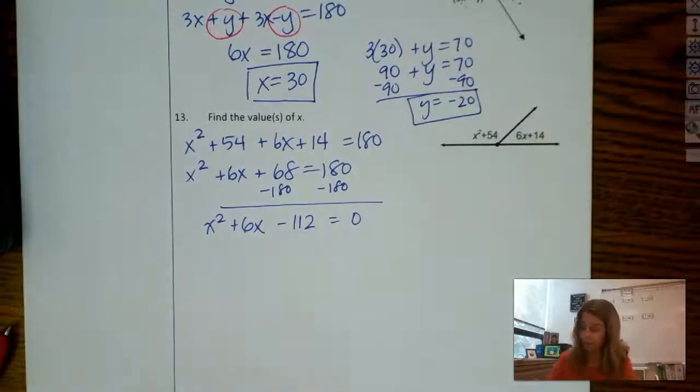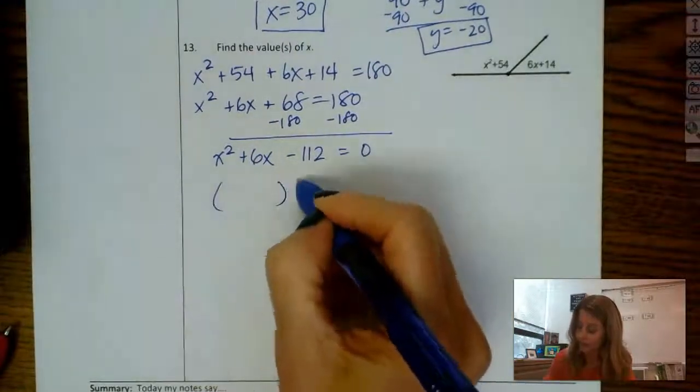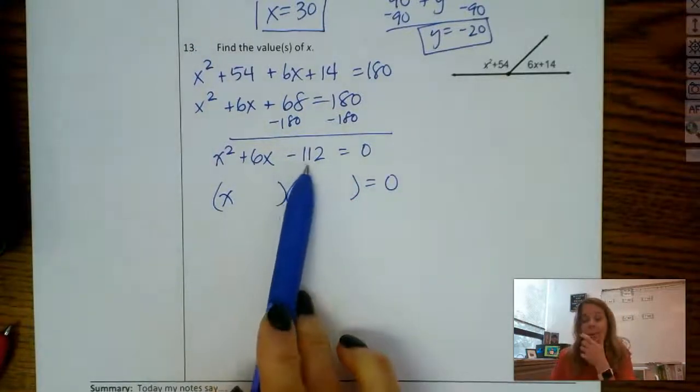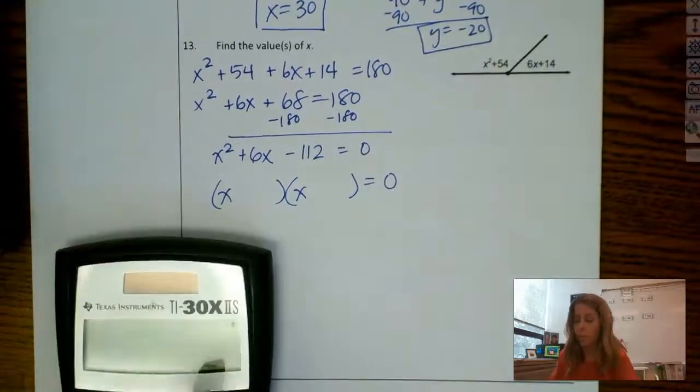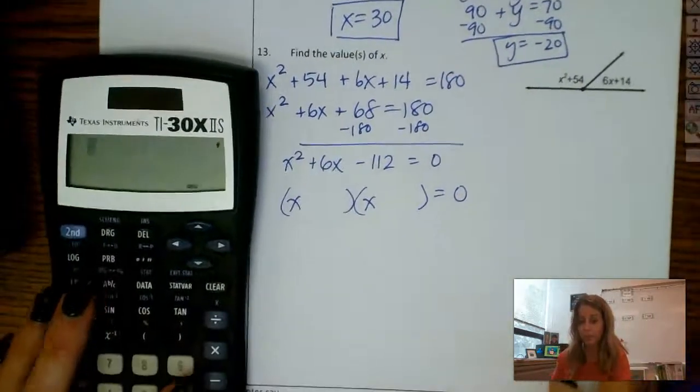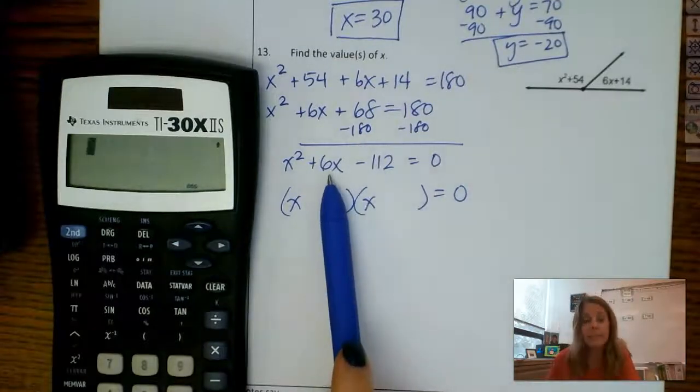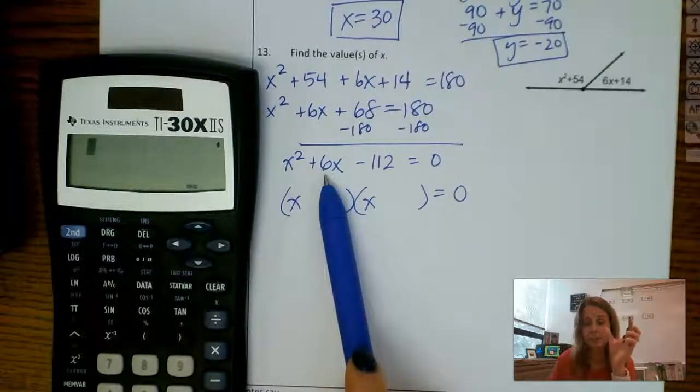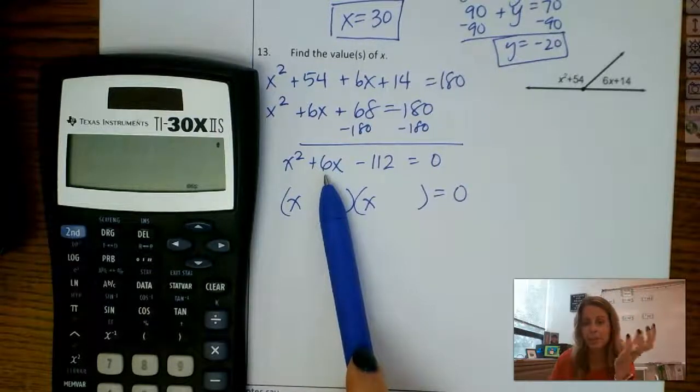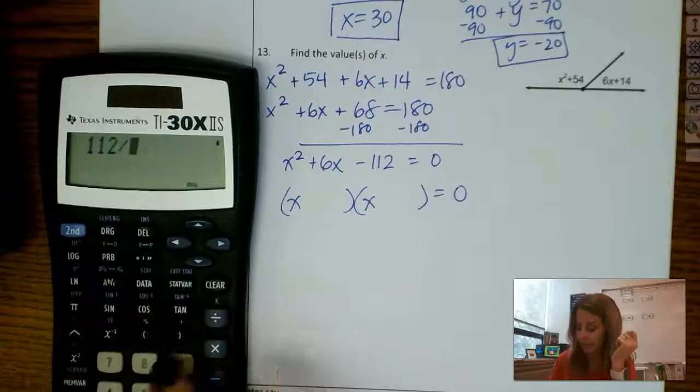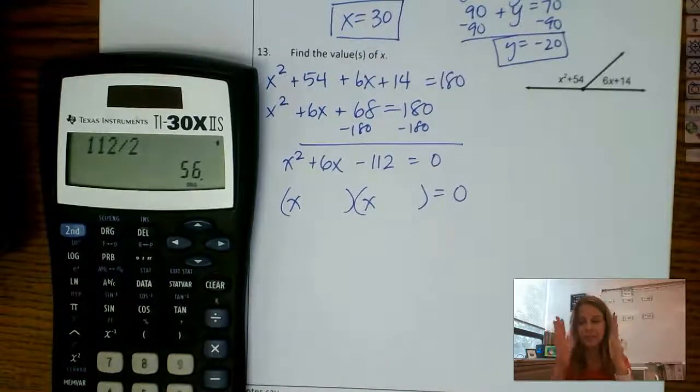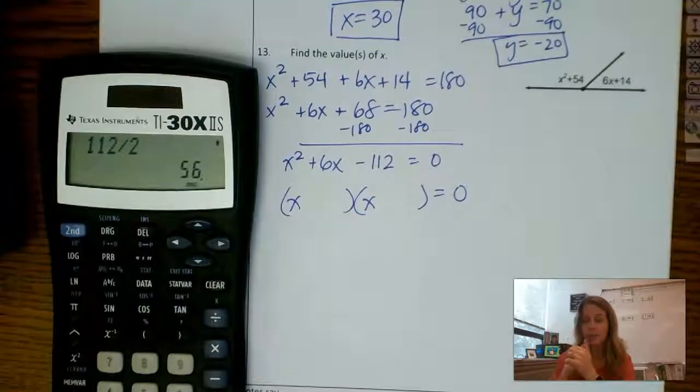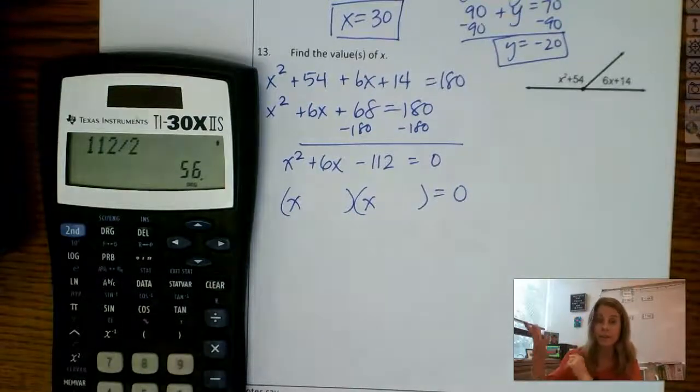I need to factor. So let's get it set up. It's got to be x times x. Factors of 112. So as you, 112 is a larger number than most of the time we factor. So if you think about this 6, I'm looking for factors of 112 that when I add or subtract them, I get a 6. So I need the factors to be 6 numbers apart from each other, 6 units. So what I mean by that is if I start with 112 and divide by 2, I get 56. Well, 56 and 2 are really far apart. So you could just keep dividing numbers in, and maybe it'll just kind of show up.